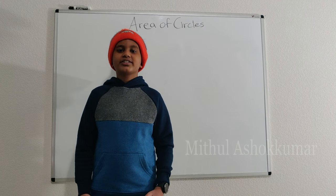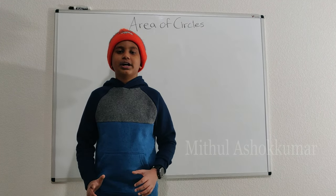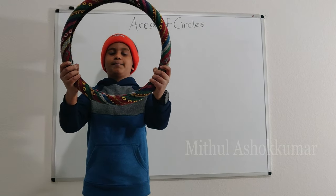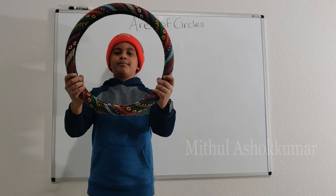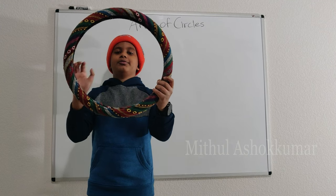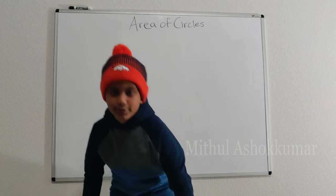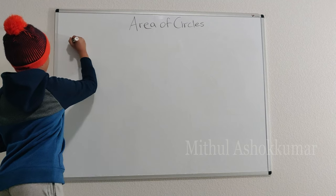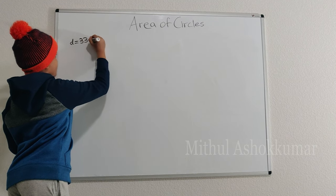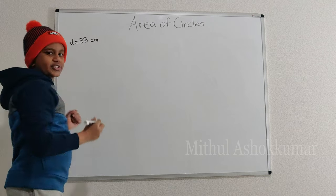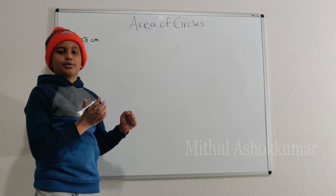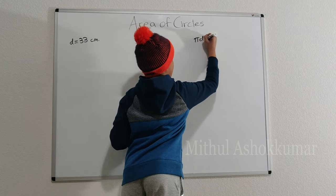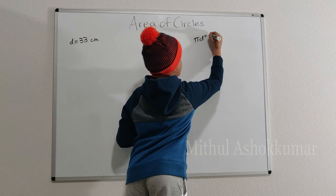Now, we are going to find out the area of a circle for a steering wheel cover. I have already figured out the diameter of the steering wheel cover, which is 33 centimeters. D equals 33 centimeters. Since we are given the diameter, we can use the formula pi d squared divided by 4.